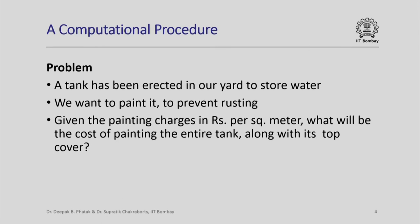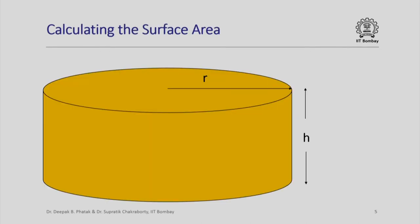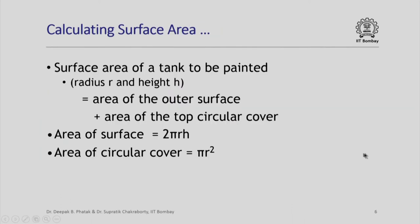This is clearly a computational problem, so we will need to make some kind of a simple mathematical model for solving this problem. First, we try to see how we can calculate the surface area. This is the picture of a tank — a cylindrical tank with some radius r and some height h. Those of you who have done simple geometry in your earlier classes would easily understand how to calculate the surface area. Let us look at the calculations.